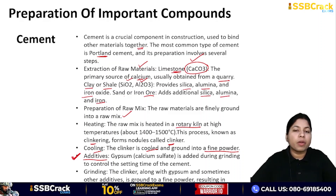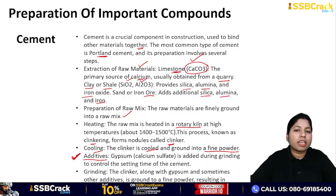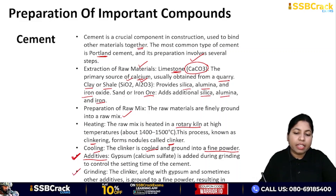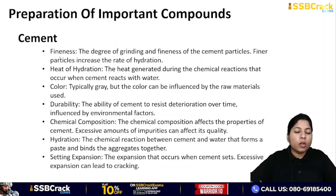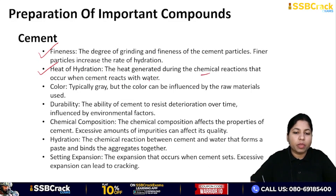Gypsum controls the setting time — that is, how long it takes for cement to go from semi-solid to solid. Along with gypsum, sometimes other additives are also added to produce the final cement. Key properties of cement include: fineness, heat of hydration (heat generated when cement reacts with water), color (gray), durability, chemical composition, hydration, setting, and expansion.